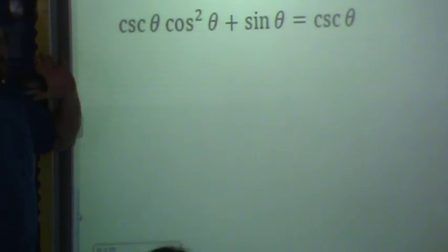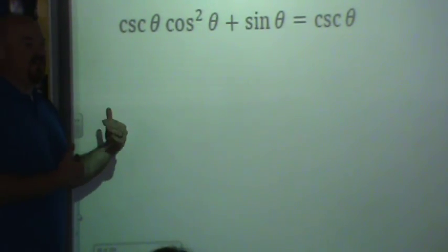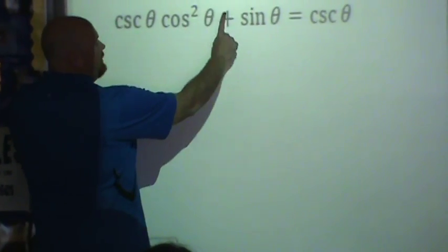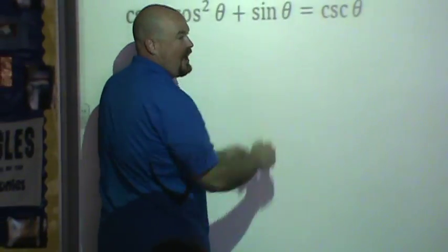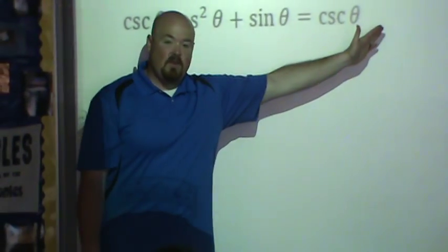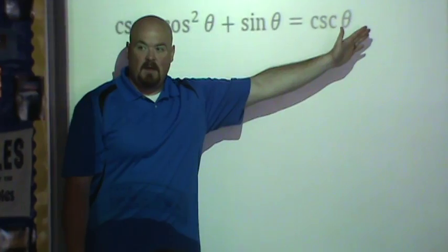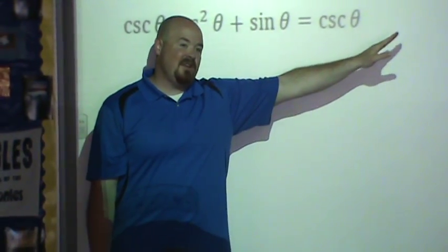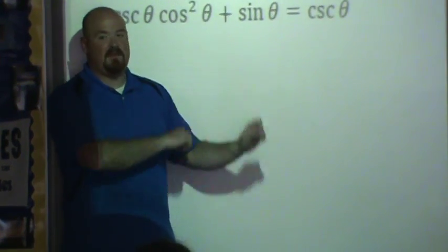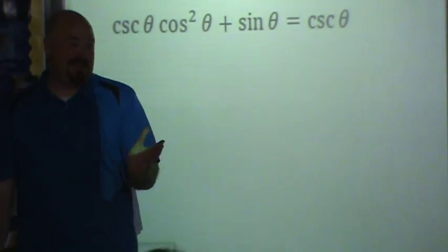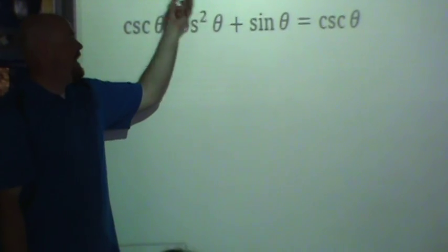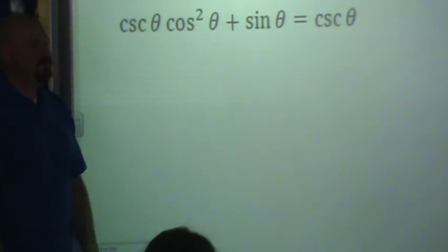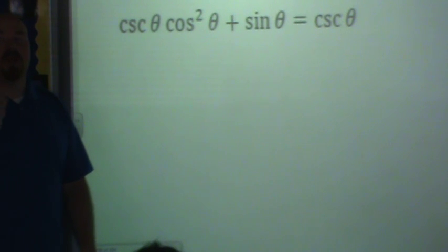I see two terms on the left. When I say two terms, I see this product, I see a plus sign, and then I see sine theta. Now on the right, I only see one term. So if I'm going to make this look like this, chances are I might have to combine these somehow. Maybe I can factor something out. But these are all the thoughts that are going through my head right now.